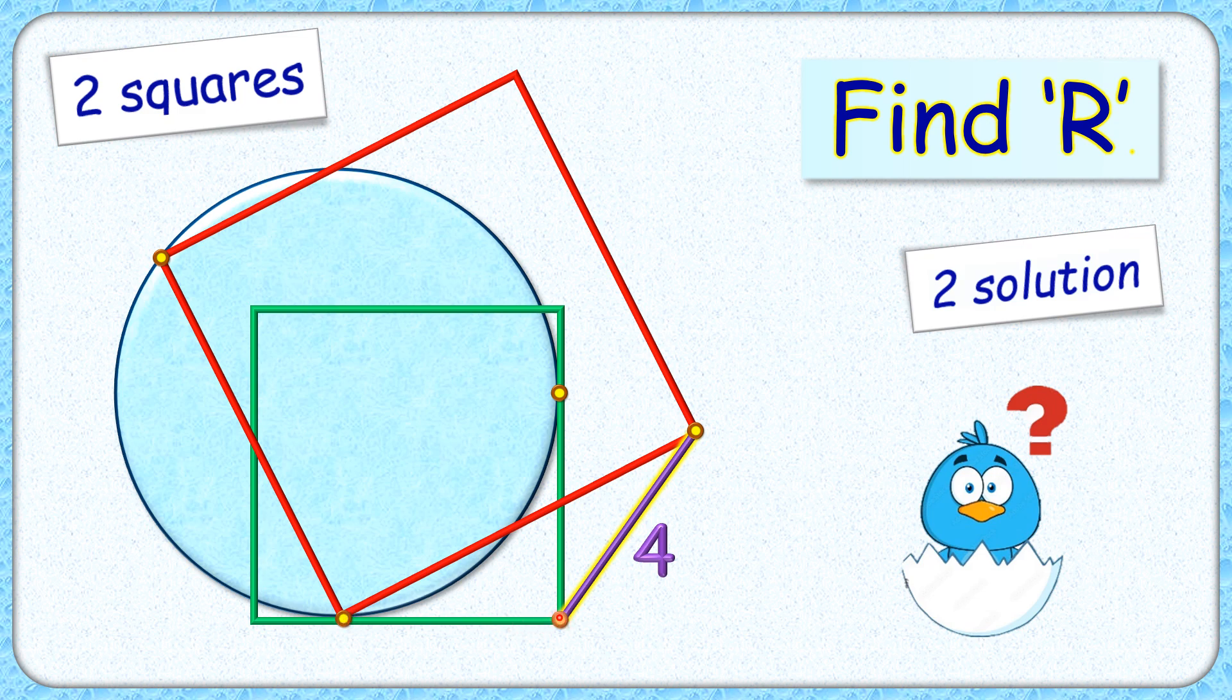Given is the distance between these vertices of green and red square is 4 cm. The exciting part is that with this limited data we have to find the radius of this circle.